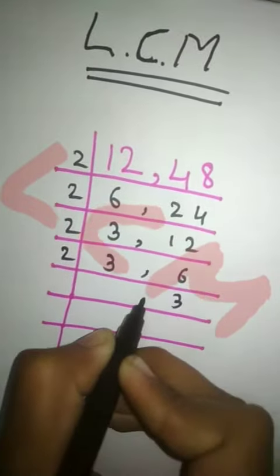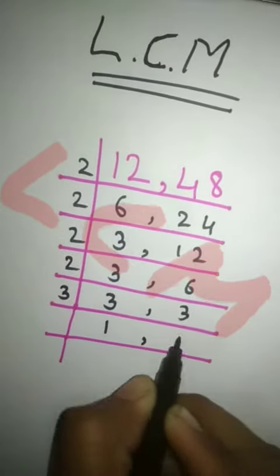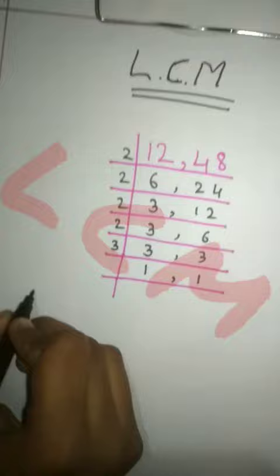2 into 3 is... 3 as it is. 3 into 3 is 1, and 3 into 3 is 1. So now we will find the LCM.